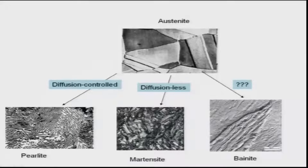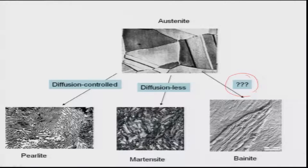Bainite is named after the scientist E.C. Bain, or Edgar Bain, who discovered mechanisms of martensitic transformations. In the slides, the mechanism of bainitic transformation is marked with a question mark because it is not yet fully understood.